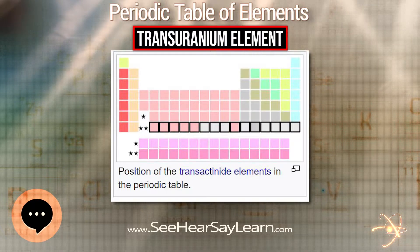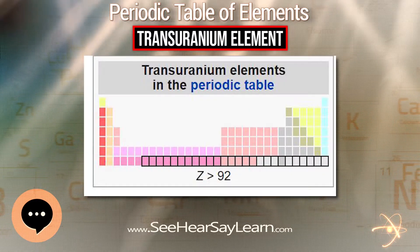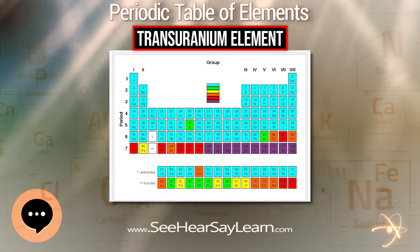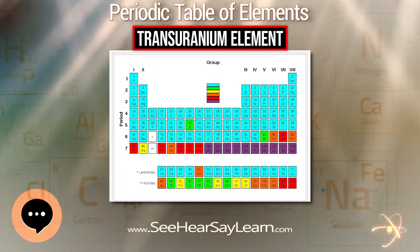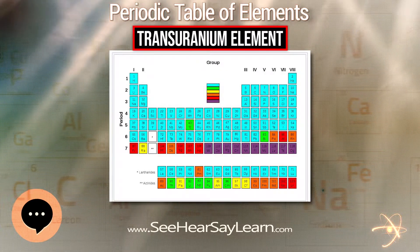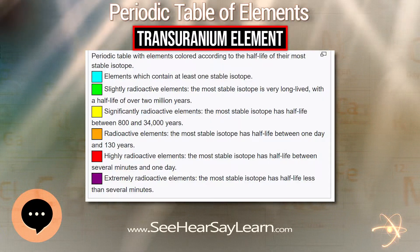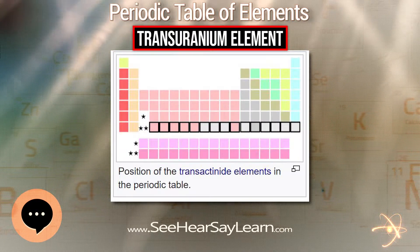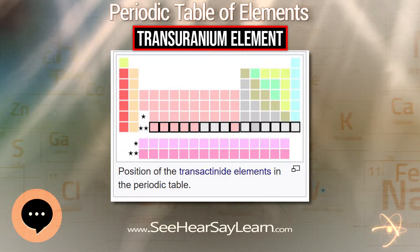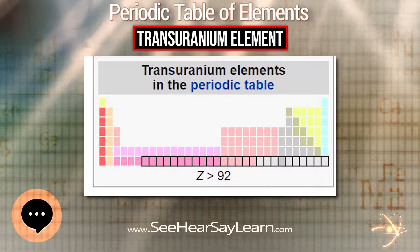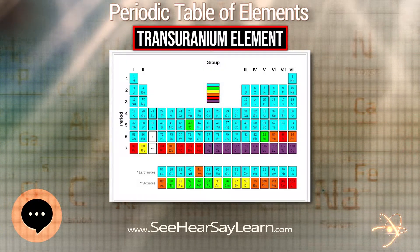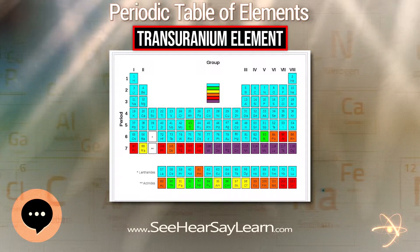Of the elements with atomic numbers 1 to 92, most can be found in nature, having stable or very long half-life isotopes, or are created as common products of the decay of uranium and thorium. The exceptions are elements 43, 61, 85, and 87. All four occur in nature but only in very minor branches of the uranium and thorium decay chains, and thus all save element 87 were first discovered by synthesis in the laboratory rather than in nature.